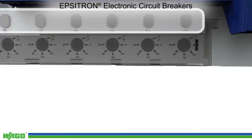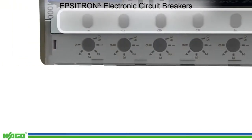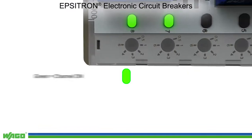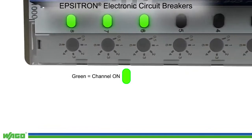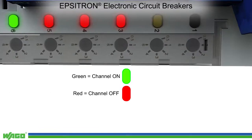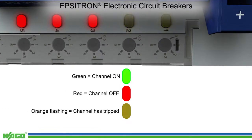Multicolor LEDs indicate the current status of the output channels. The LED lights green when the channel is activated, red when the channel has been manually switched off, and flashes orange when the channel has tripped.